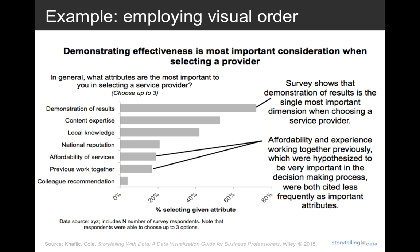We have a clear call-out at the top: demonstrating effectiveness is the most important consideration. Our graph is titled. Our axes are titled. We have some information on the survey. There are some call-outs on the right-hand side for context — a couple dimensions going into the survey they thought were going to be very important, like affordability of services and previous work together, that turned out to actually be less important. Really it was demonstration of results that was the top driver in choosing vendors. But there are also some things I don't like about the design of this slide, and mainly those come down to two areas: alignment and white space.